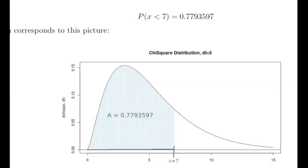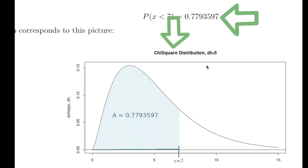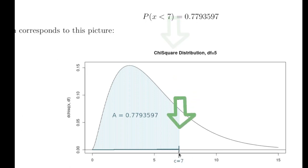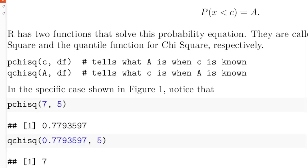For each one of these distributions, we need to recognize a connection between a probability equation and a picture. In this case, the probability that x is less than 7 is equal to a particular amount. Here's 7 on the x-axis, and there's the probability of being less than 7 in this chi-squared distribution with degrees of freedom of 5.